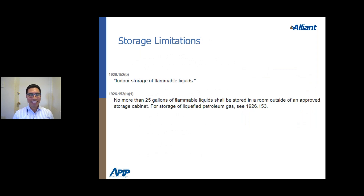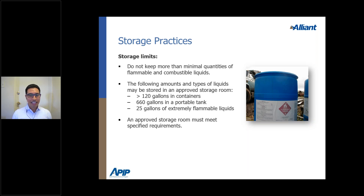There are quantity limitations for flammable liquids, pulled from CalOSHA regulations. No more than 25 gallons of flammable liquids should be stored in a room outside of an approved storage cabinet. OSHA requirements also state: if greater than 120 gallons, must be in containers; up to 160 gallons in a portable tank; and up to 25 gallons of flammable liquids in approved storage rooms.